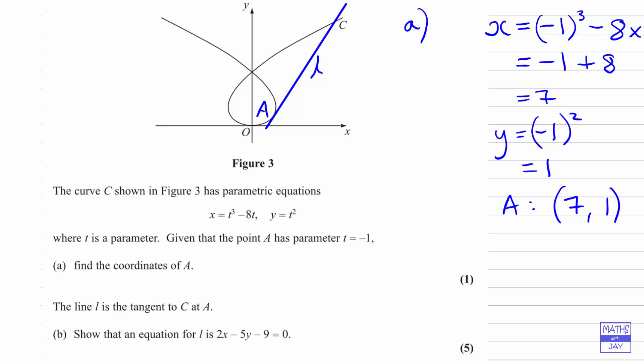We know the coordinates of A are 7, 1. We need to show that an equation for that line is the given equation, so it's nice that we've got the answer to compare it with.